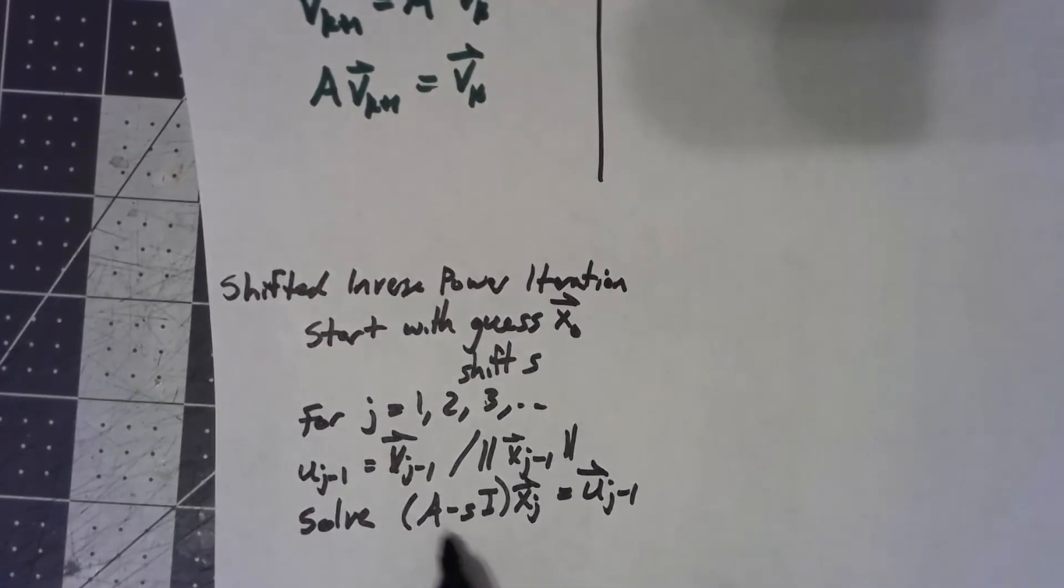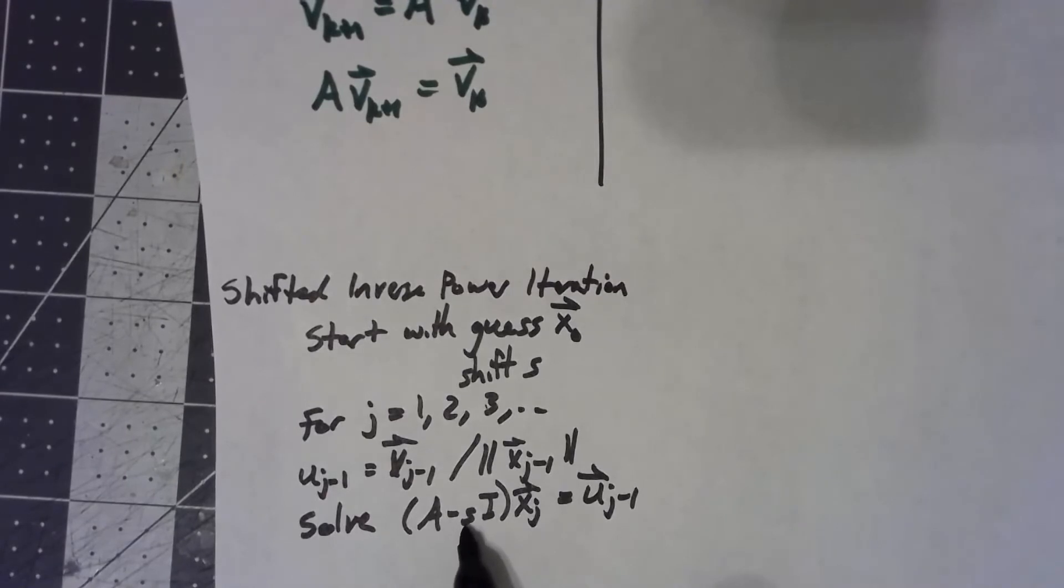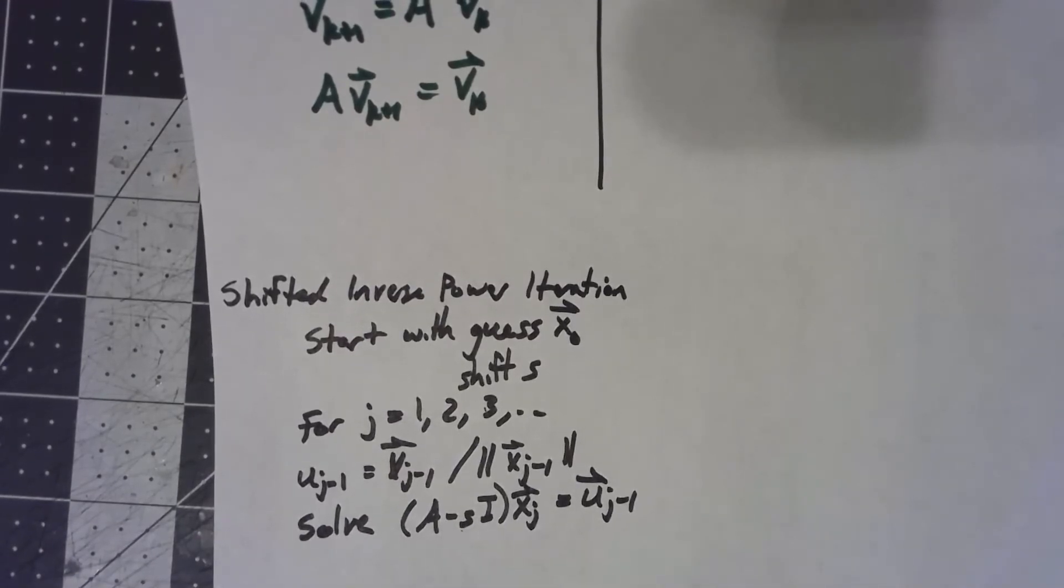Again, we're finding the largest eigenvalue of this, which is the smallest eigenvalue of this inverse, which will be the largest eigenvalue of this.